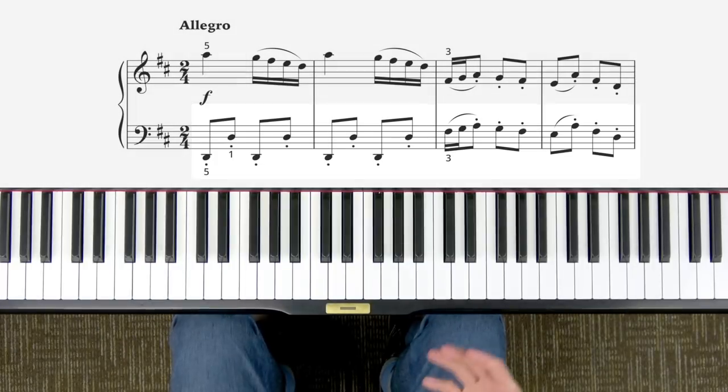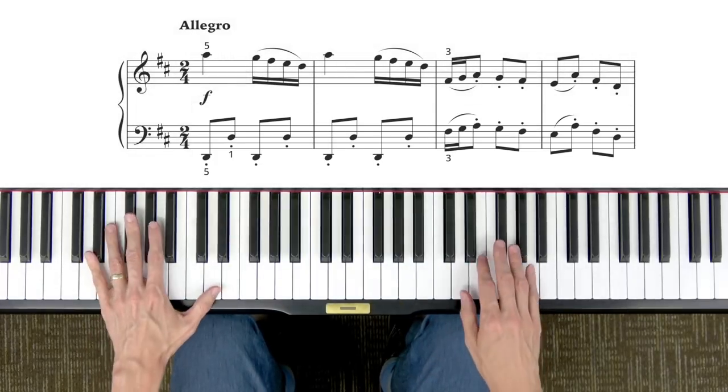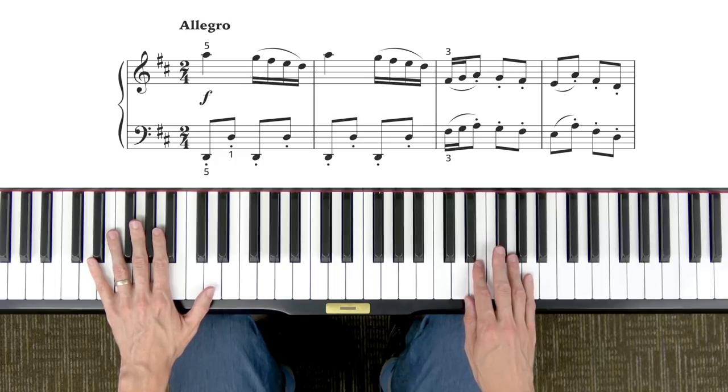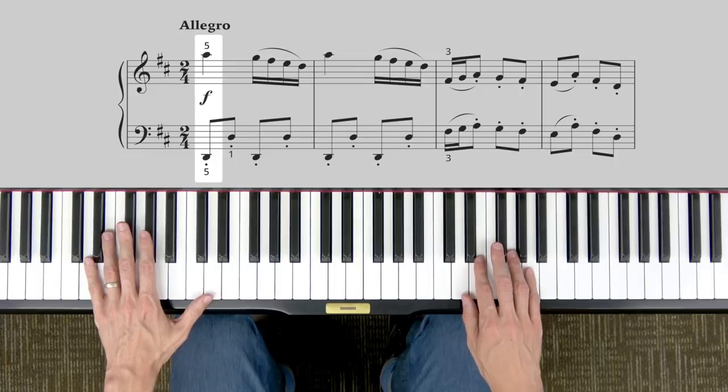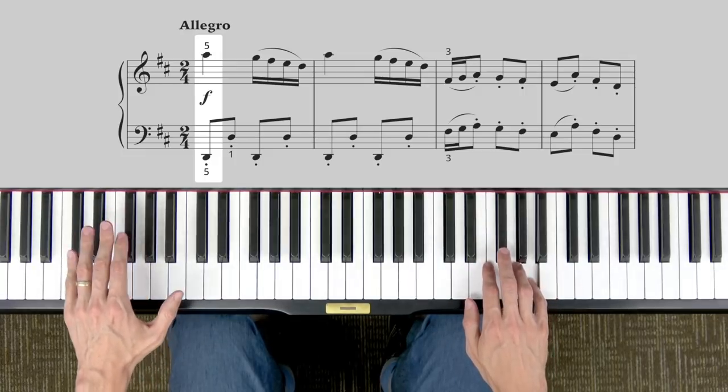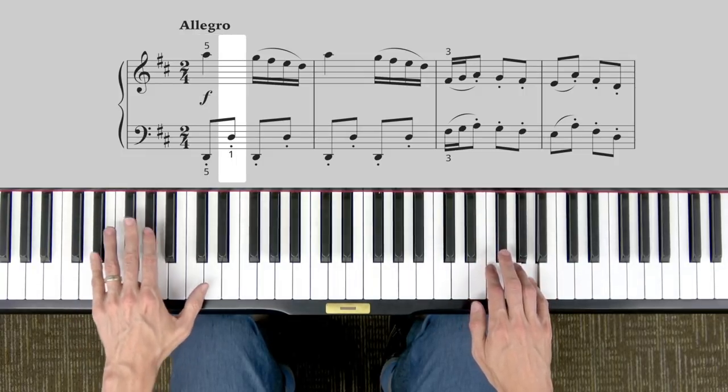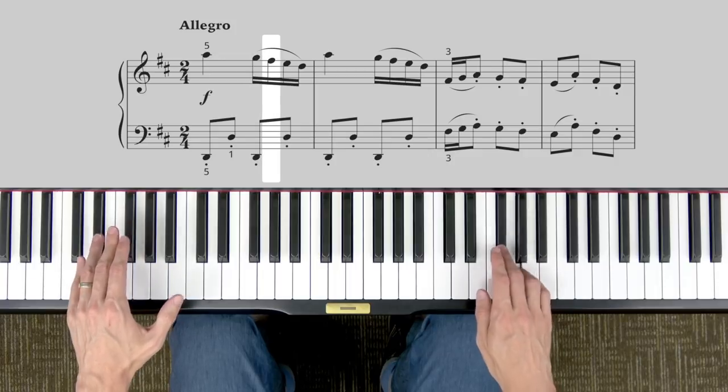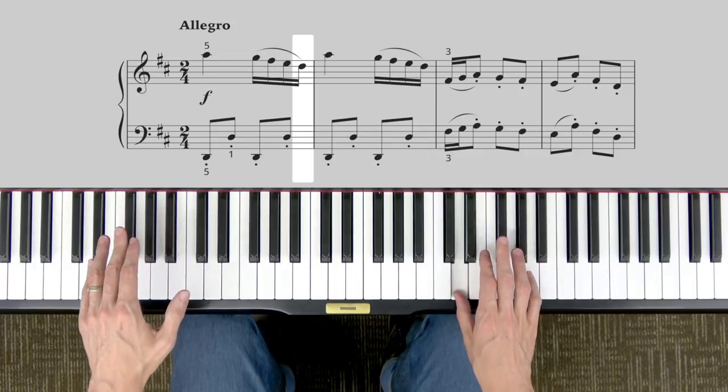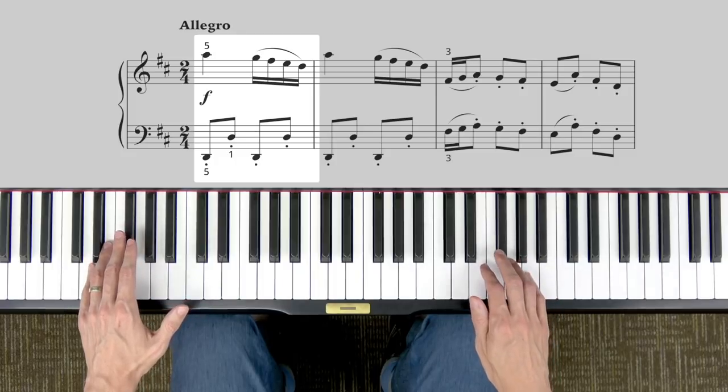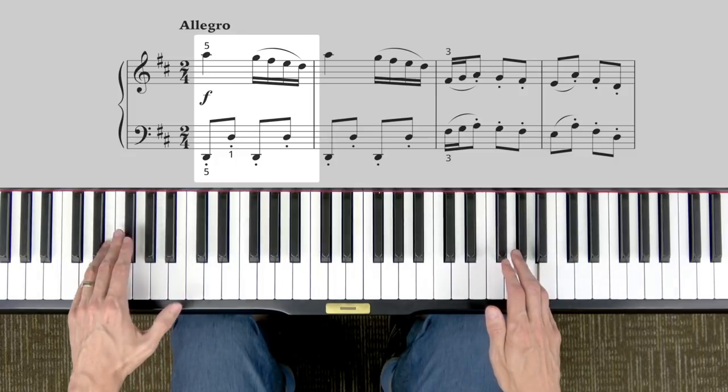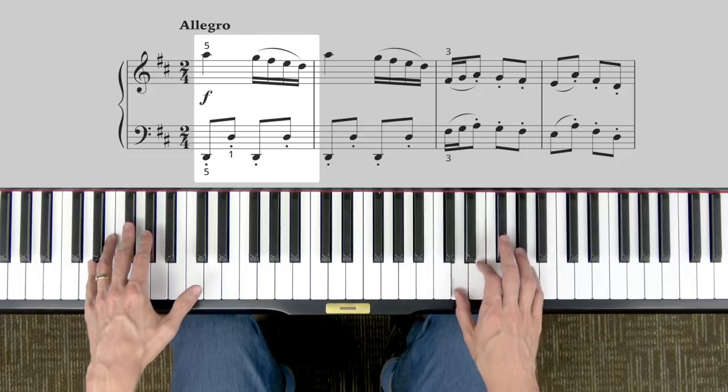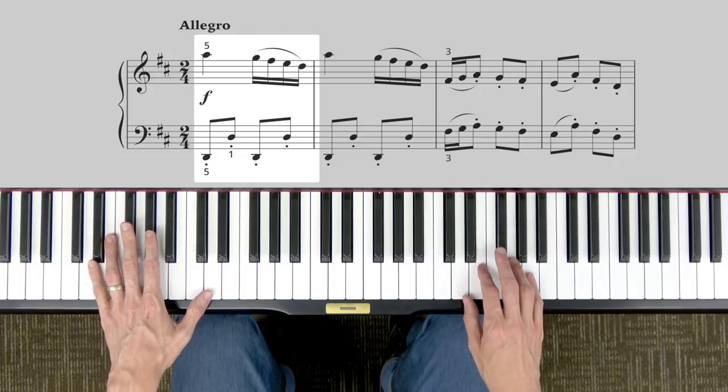Now today you probably won't feel ready to try it hands together, but when you do just notice when the notes line up and when they don't. For example, in beat 1 we play together, then the left hand plays alone, then we play together right together right. Do you see how some notes line up and sometimes one hand is playing by itself? Together left, together right, together right.